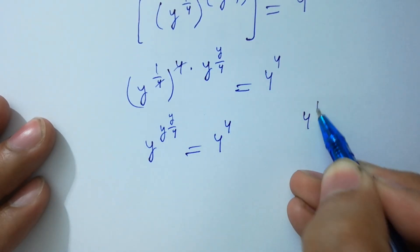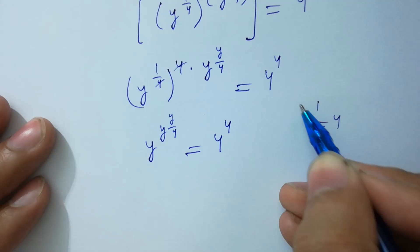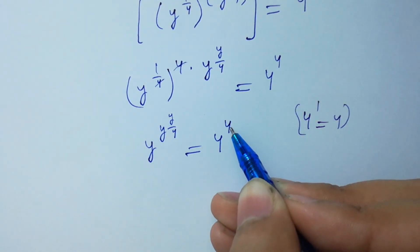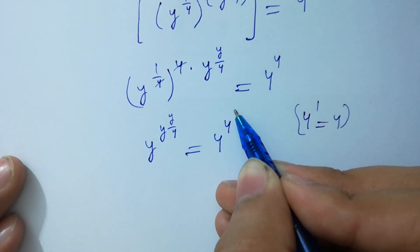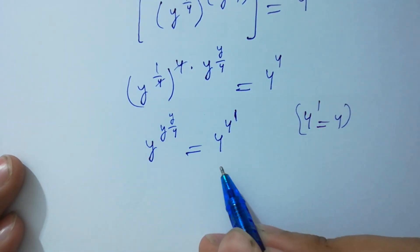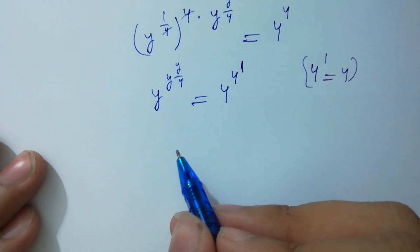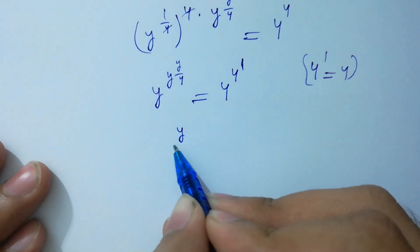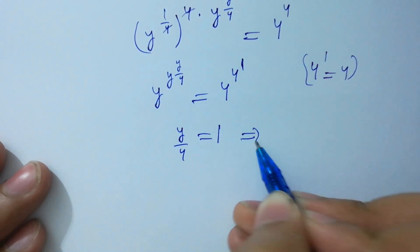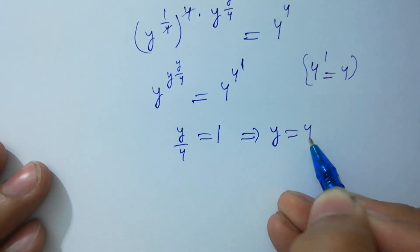Since 4 to the power 1 equals 4, we can write 4 as 4 to the power 1. By corresponding exponents, we have y over 4 equal to 1, which gives y equal to 4.